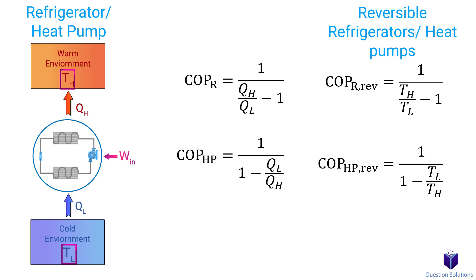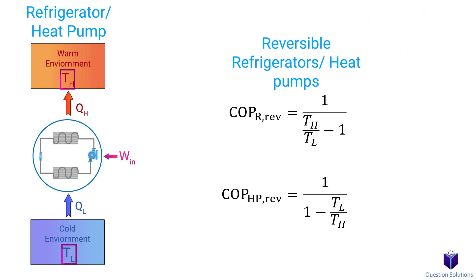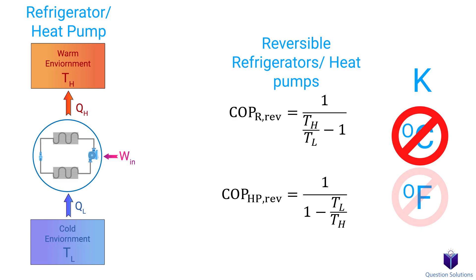In simple terms, these give us the highest COP values we can get from a refrigerator or heat pump, and they're based on reservoir temperatures only. Keep in mind that TH and TL must be in Kelvin for this equation to work. Don't use Celsius or Fahrenheit or you will end up with the wrong answers.